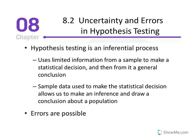In this situation, there is always the possibility that an incorrect conclusion will be made. Although sample data are usually representative of the population, there is always a chance that the sample is misleading and will cause a researcher to make the wrong decision about the research results. In a hypothesis test, there are two different kinds of errors that can be made.